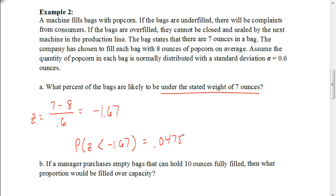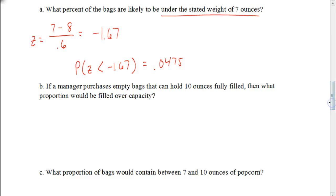So about 4.8% of my bags would be underweight, meaning that 4.8% of my customers will not be happy. Now, if a manager purchases empty bags that can hold 10 ounces fully filled, what proportion would be filled over capacity? As a business owner, if the bag gets overfilled, it's going to jam the next machine and slow down production, so I want to make sure that doesn't happen.